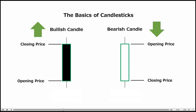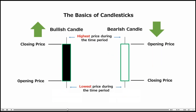For a bullish candle, the bottom of the candle body shows the opening price and the top of the candle body shows the closing price. Bearish candle is the reverse: top is opening, bottom is closing. The vertical line stretching both ends tells you the highest price and the lowest price during the time period.